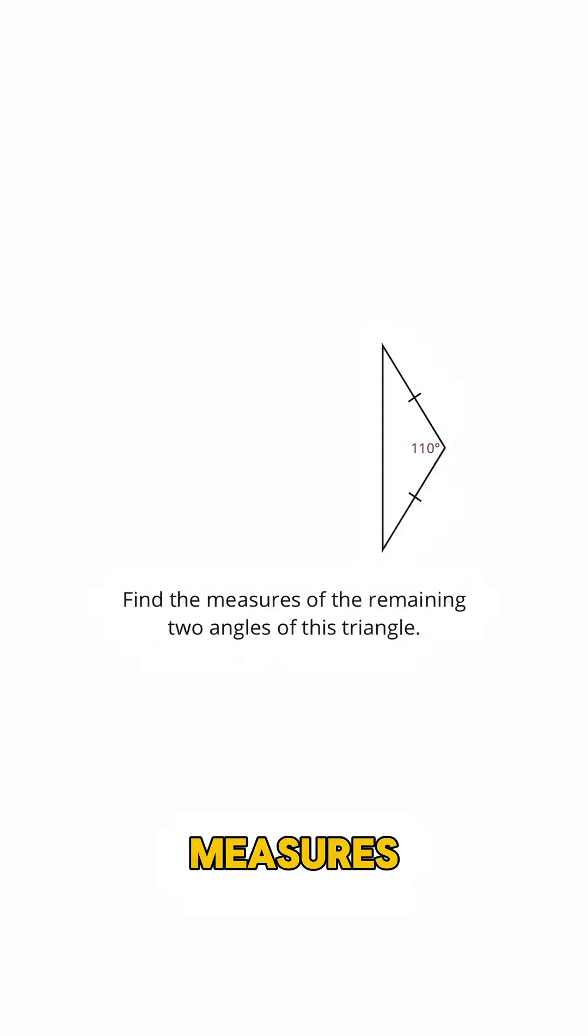Excellent! Because this angle measures 110 degrees, that means you have 70 degrees left to divide among these two equal angles, so each one is 35 degrees.